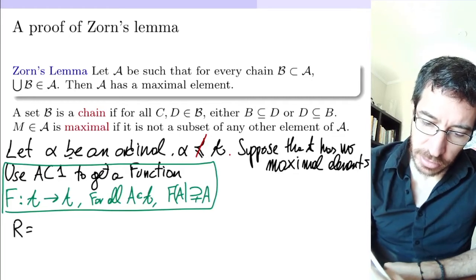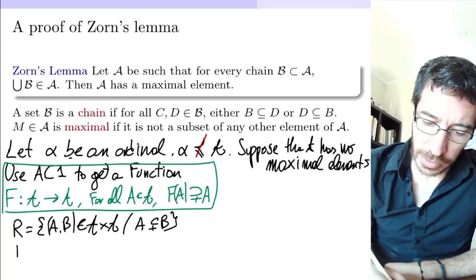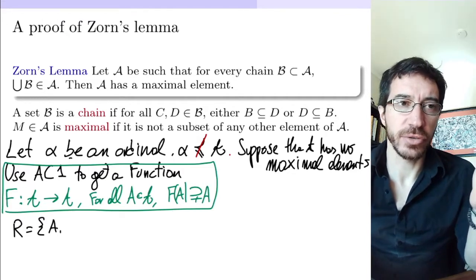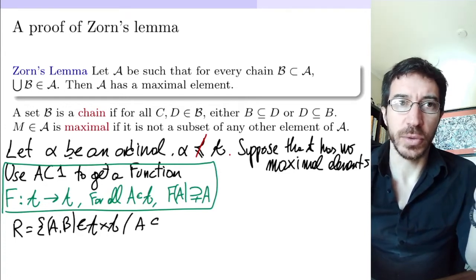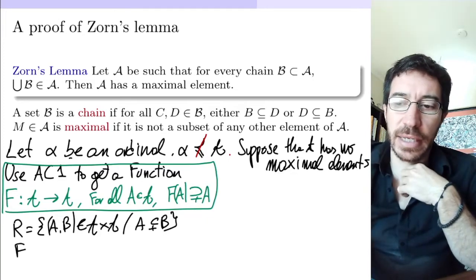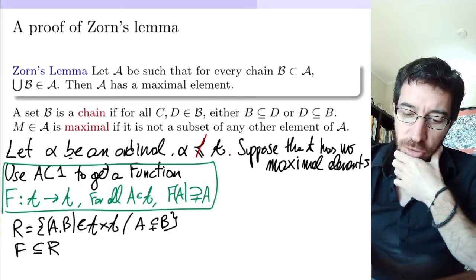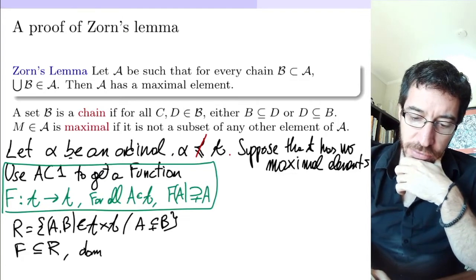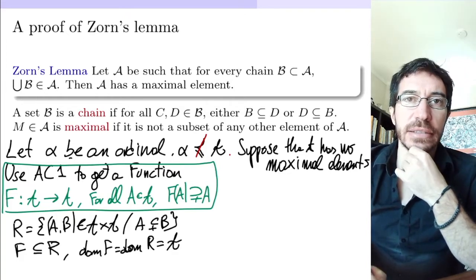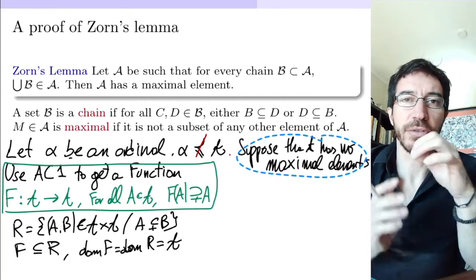We take the relation R to be all the pairs (a, b) in A × A such that a is a proper subset of b, and we take F to be a subset of R — essentially a function that maps each element to a strictly bigger one. Since A has no maximal element, the domain of R is all of A by the axiom of choice, because every set in the collection has a proper superset according to our assumption. So that's what the axiom of choice buys us: for every set it gives us a bigger set.